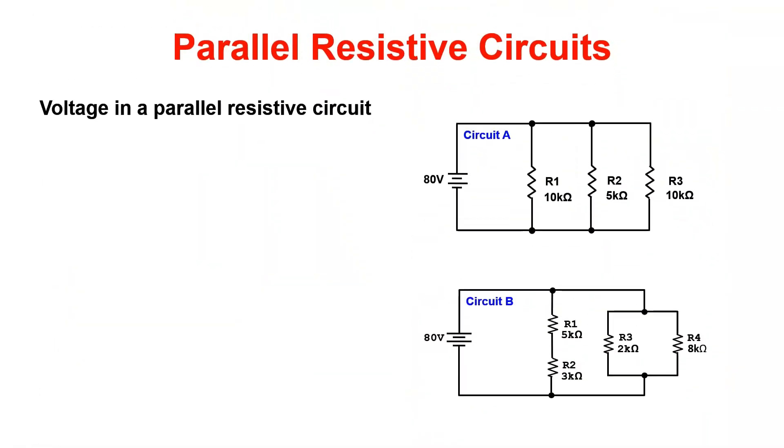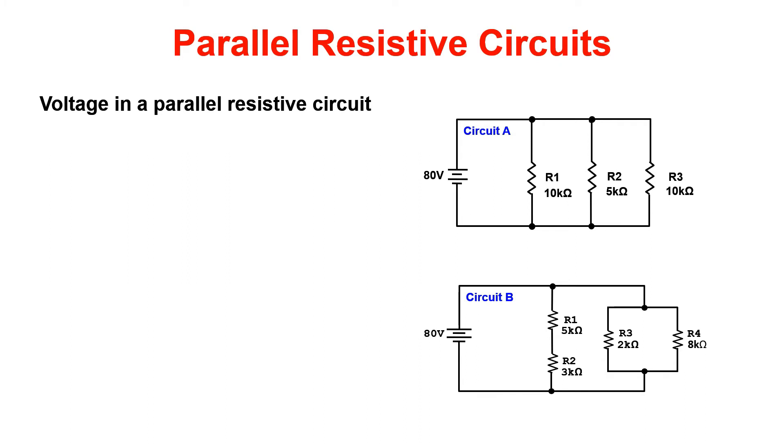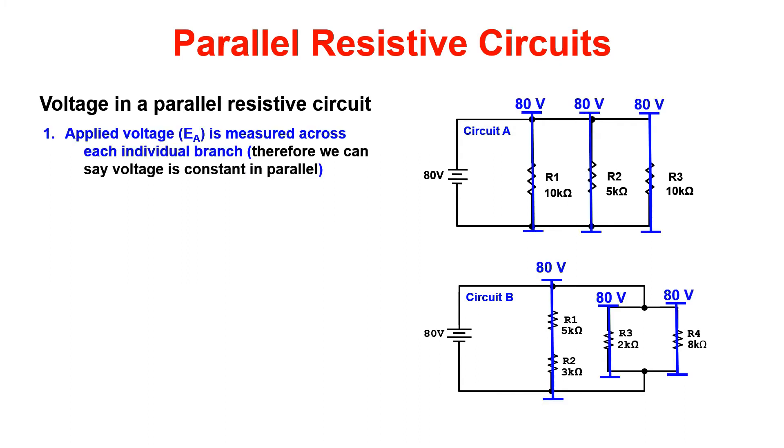If we know that a parallel circuit is known as a current divider, applied voltage is measured across each individual branch. Therefore, we can say that voltage is constant in parallel.